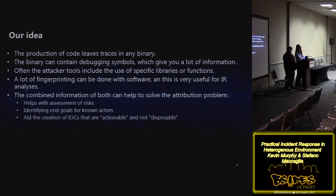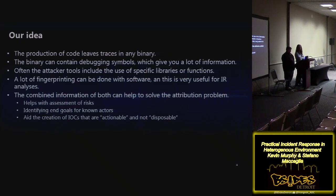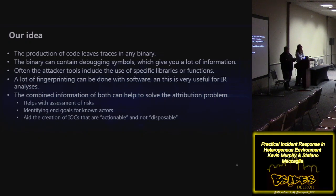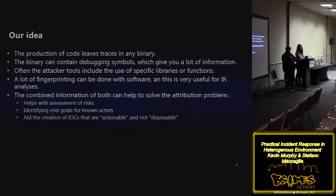Our idea to address this issue is that production of code always leaves traces in any binary. There are going to be certain libraries and certain pieces of text in each binary that we can look for. Some binaries may contain debugging symbols, which provides a lot of potential information. Attacker tools often use only certain libraries or functions that we can search for, and a lot of fingerprinting can be done with software, which is really useful for IR analysis. Combining this information can help solve the attribution problem — assessing risk and identifying the end goals of the actors.